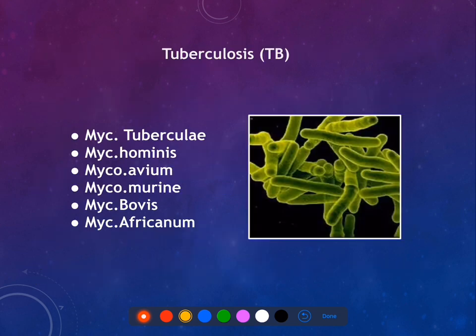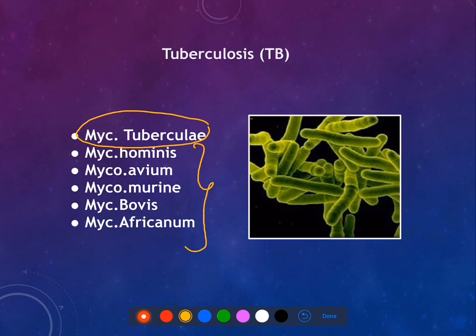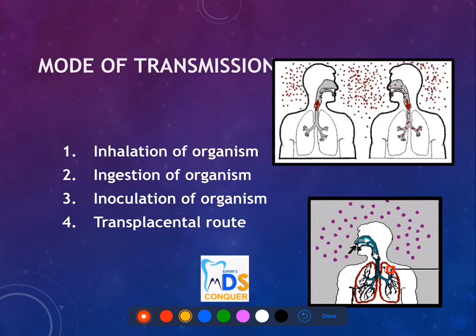Moving into tuberculosis: it is mainly caused by Mycobacterium tuberculae, along with other species responsible for tuberculosis formation. The mode of transmission includes inhalation, ingestion, inoculation, or a transplacental route.